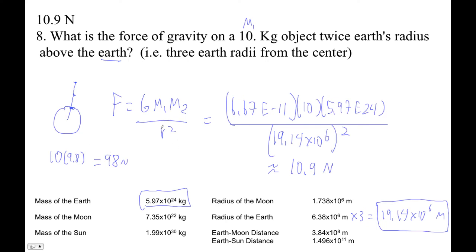If you're three times farther away, since it's inverse square, it should be that divided by 3 squared. So that divided by 9. Let's try that. 98 divided by 9. Hey, that's 10.9 as well.